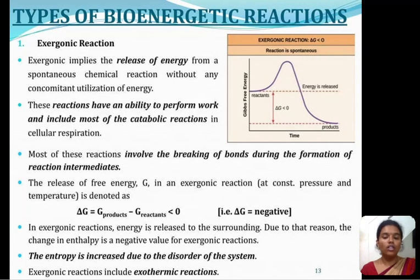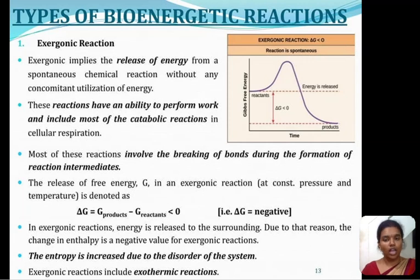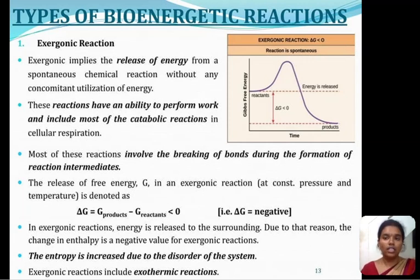The enthalpy is increased due to disorder of the system. Exergonic reactions include exothermic reactions where delta H is negative. The graph indicating the exergonic reaction shows that delta G is less than zero.